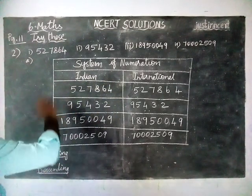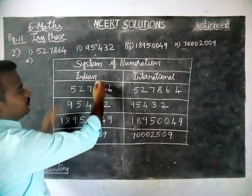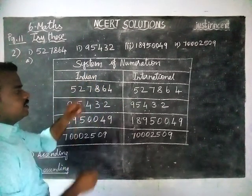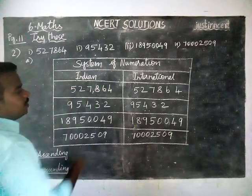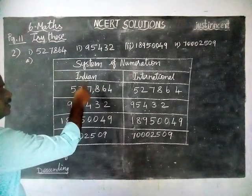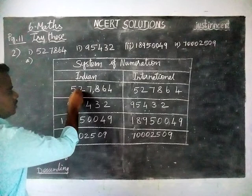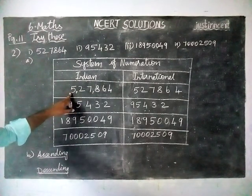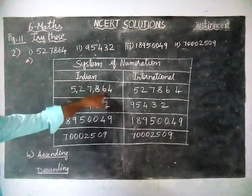So now first we are going to see the first number. In Indian system of numeration, from right hand side we have to take first 3 digits: 1, 10, 100 — then comma. Then 1000, 10,000 — then comma. So now this answer is 5,27,864.